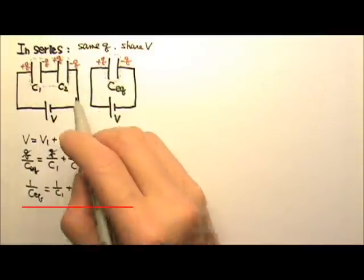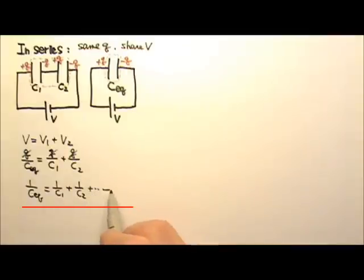If we have more than two capacitors in series, we can just keep on adding the one over C.